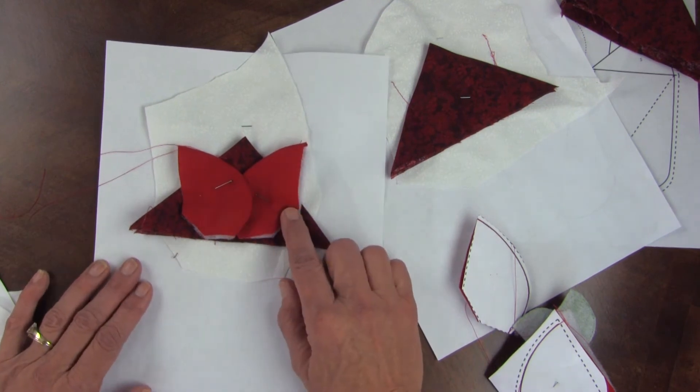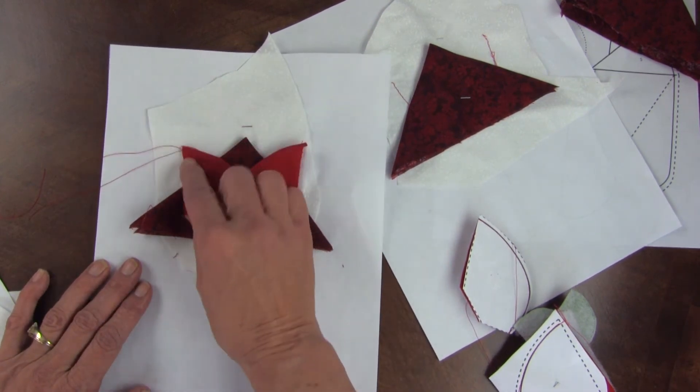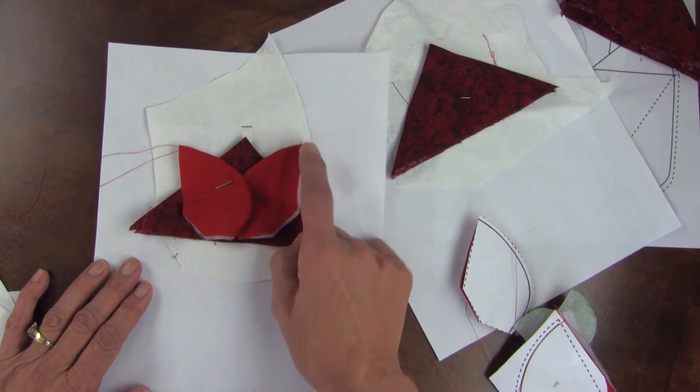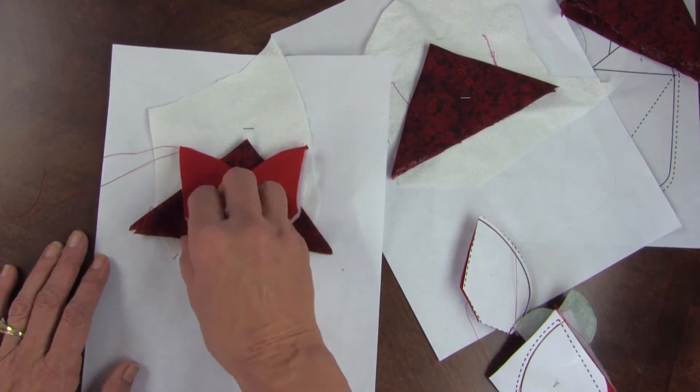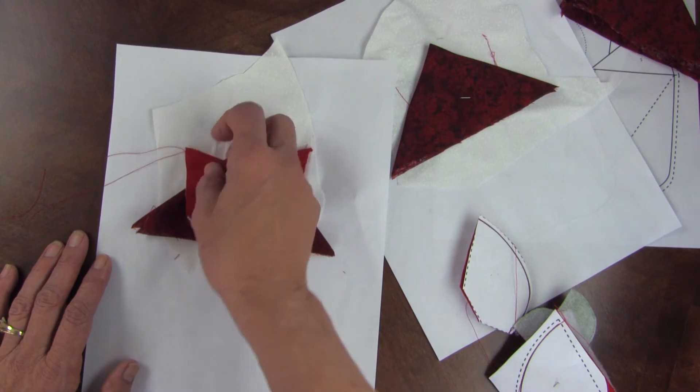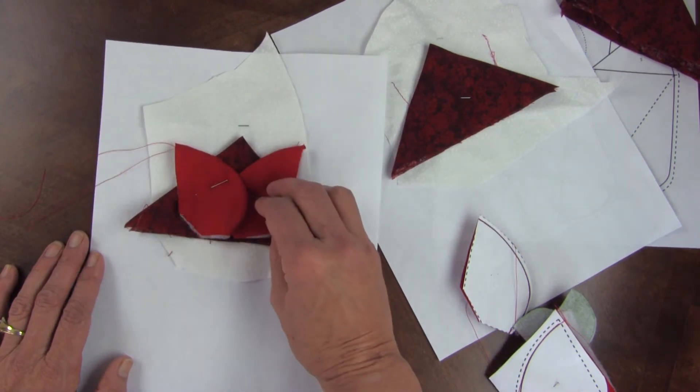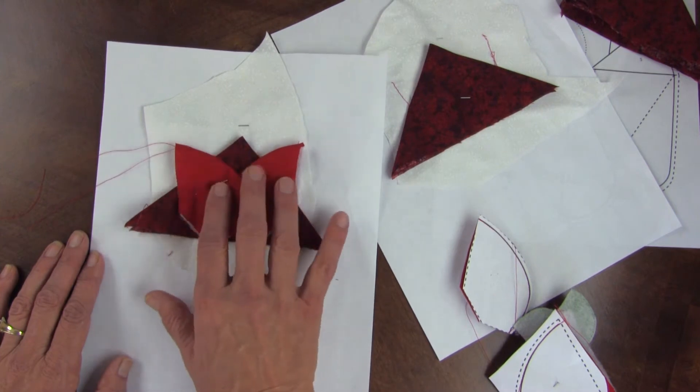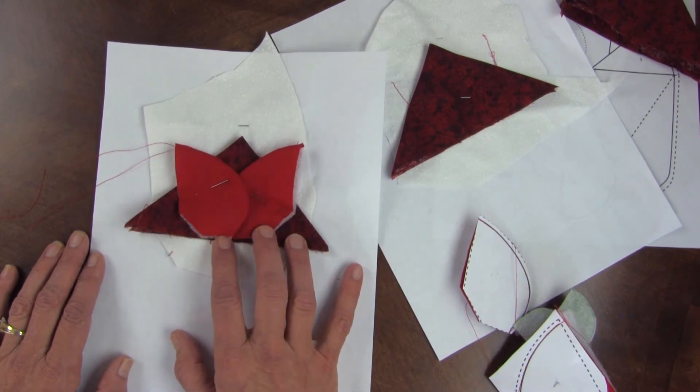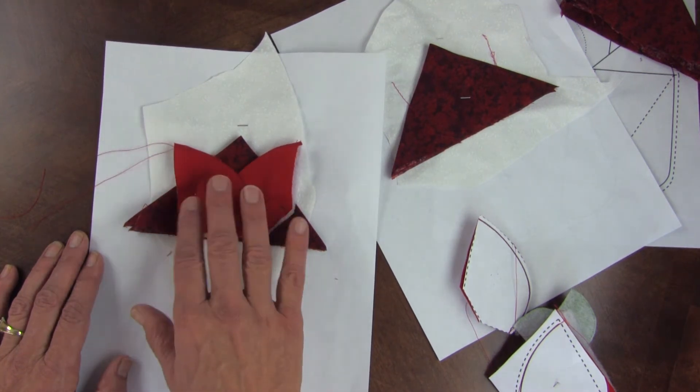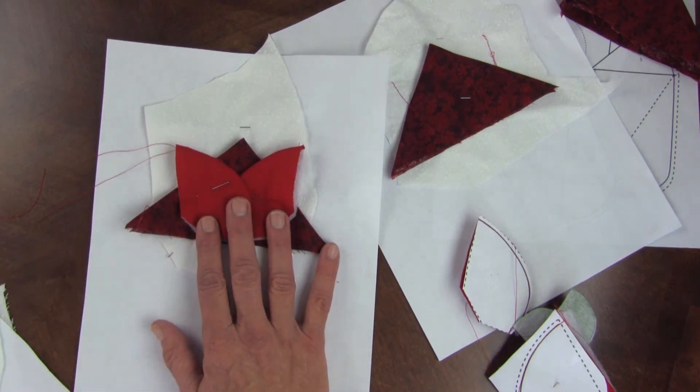Now, all the raw edges are placed a quarter of an inch past that basting. Okay? Pretty easy to see. You can lift it up and you can see. I like to place the one side down first on all the pieces, so that when the whole thing's put together, it'll be uniform which side is on top. And I pin that so that it's very, very secure.